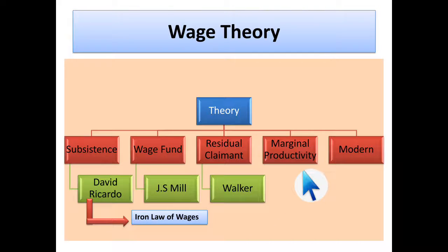The marginal productivity theory states that the labor whose marginal productivity is more will get more wages — wage payment depends upon marginal productivity. The modern theory says that the point where demand of labor and supply of labor intersect determines the wage value. You need to know the concept behind each theory and the name of the scientist who gave it.